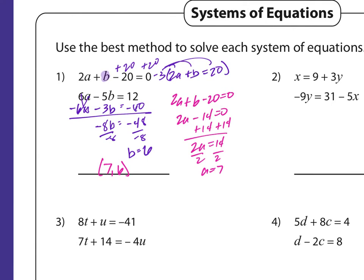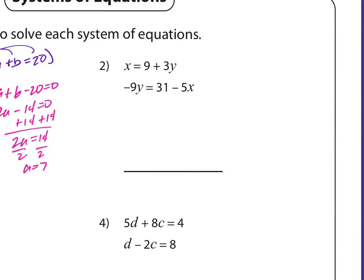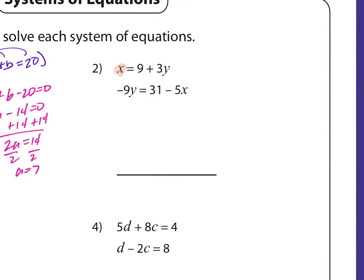Any questions? I honestly don't remember if I put this in your notes — sorry about that. For number 2, I'm definitely going to use substitution because it already has x equals something. It has x equals 9 plus 3y, so I'm going to take that expression and substitute it in wherever there's an x.